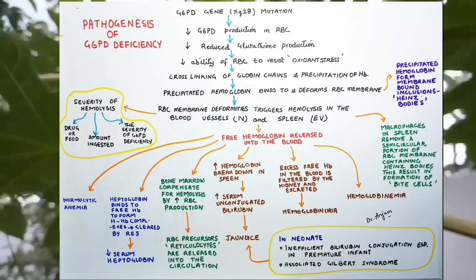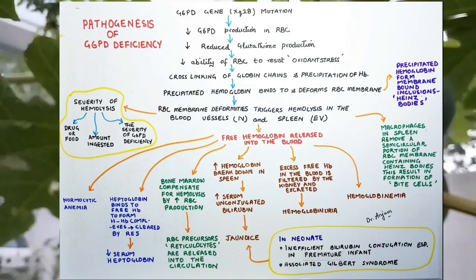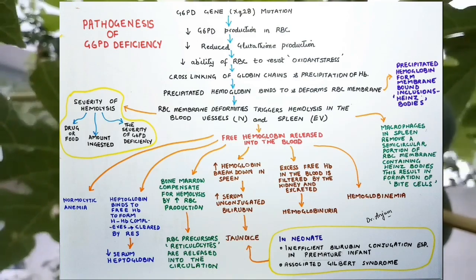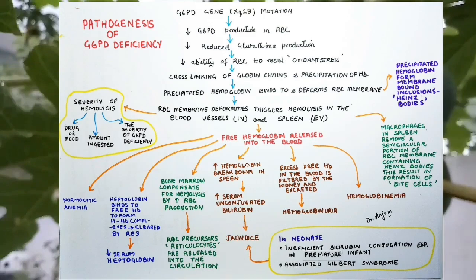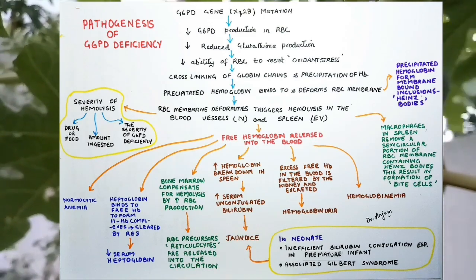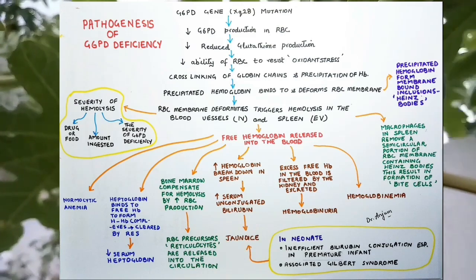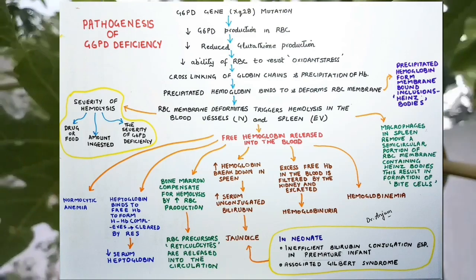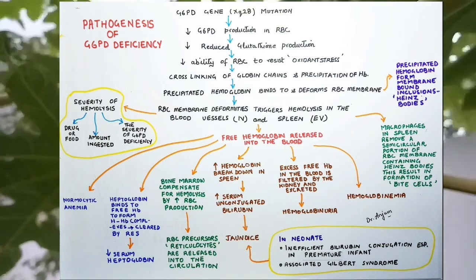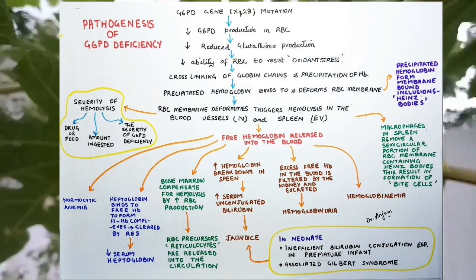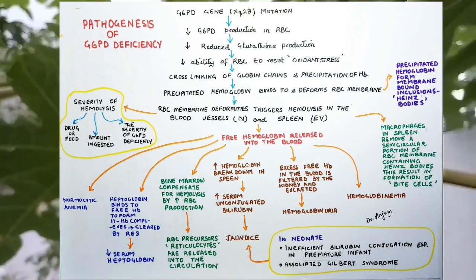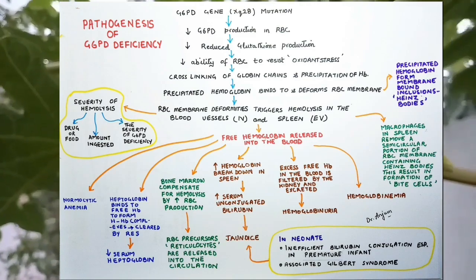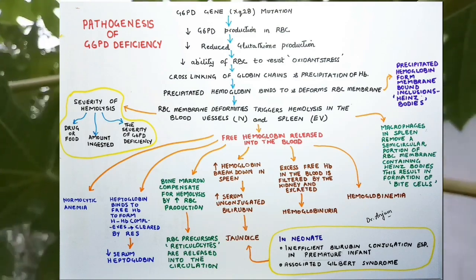G6PD gene mutation results in decreased G6PD production in the RBCs, leading to decreased reduced glutathione production and decreased ability of the RBC to resist oxidant stress. Oxidant exposure results in cross-linking of the globin chain and precipitation of hemoglobin. Precipitated hemoglobin binds to and deforms the RBC membrane, forming membrane-bound inclusion bodies called Heinz bodies. These Heinz bodies are removed by the macrophages of the spleen as a semicircular portion of the RBC, resulting in the formation of bite cells.